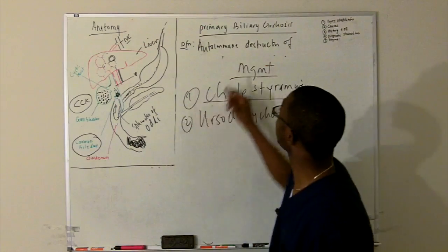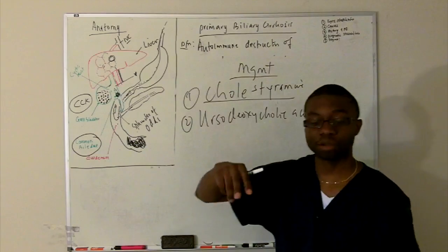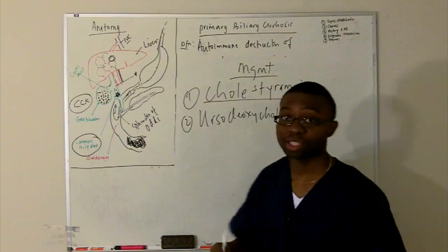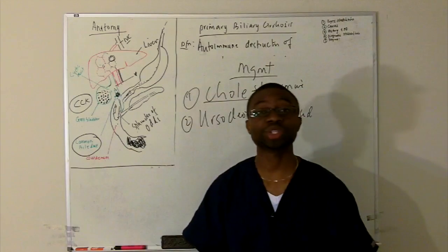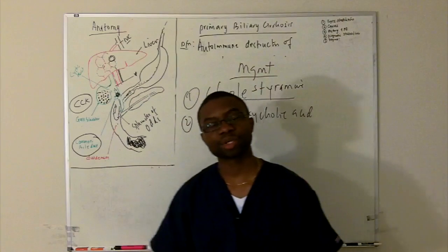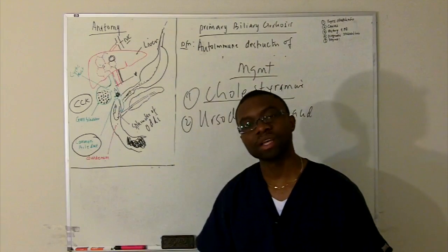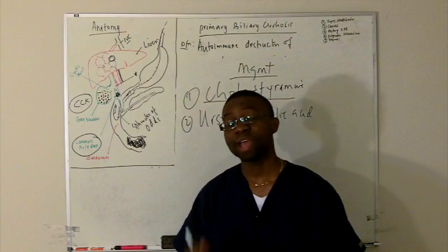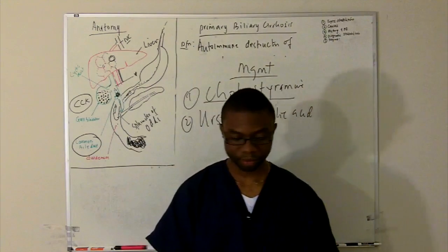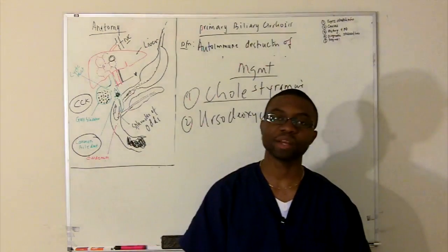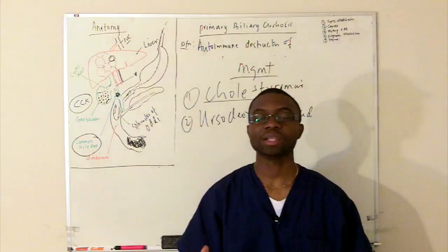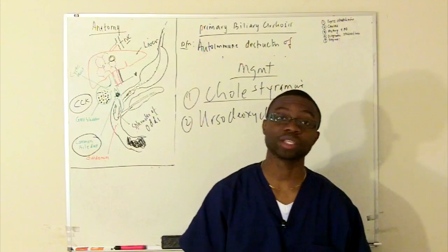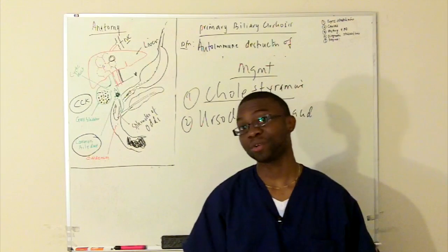Don't forget: primary biliary cirrhosis is cirrhosis coming from autoimmune inflammation of the intrahepatic ducts. We get strictures, we order labs showing a mixed-picture cholestatic LFTs, we give cholestyramine or ursodeoxycholic acid, and ultimately a liver transplant. Most importantly: AMA — anti-mitochondrial antibodies — these are the very important antibodies you have to order for this patient.